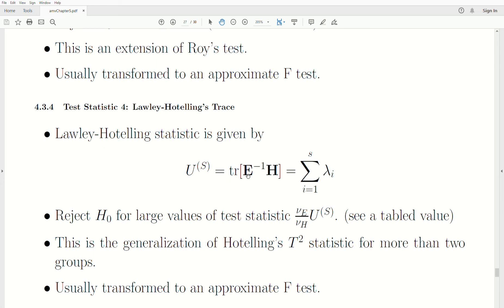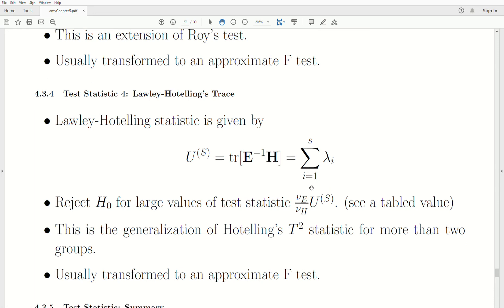But the nice thing is that this is really a generalization of Hotelling's T-squared statistic for more than two groups. And, again, it's usually transformed to an approximate F test. What I find very fascinating is the calculation of that if there's two populations, then the Lawley Hotelling's test, which ends up being just one eigenvalue, so it's lambda one, that eigenvalue is 100% Hotelling's T-squared statistic. And so it's kind of fascinating to go back and forth between this one eigenvalue and Hotelling's T-squared, which we did earlier in this chapter.